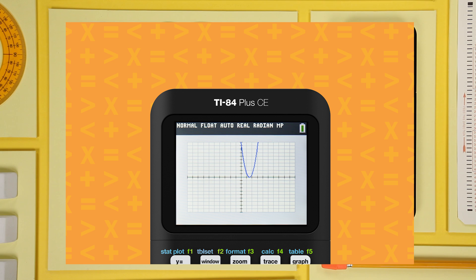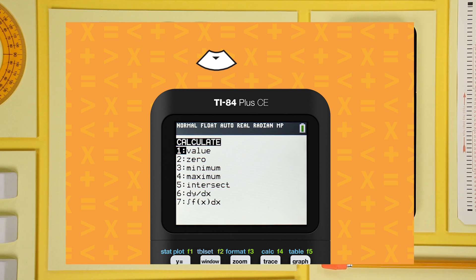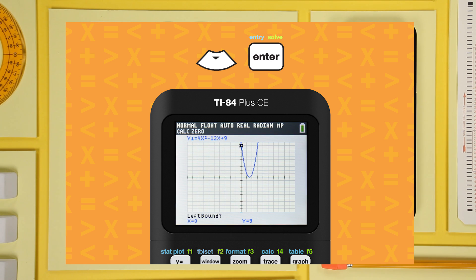Now, find the x-intercepts, aka zeros or roots. It looks like there's only one.